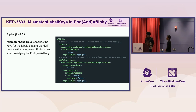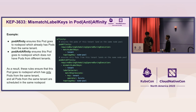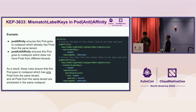At the same time, we introduced mismatch-label keys, which sounds very similar. Mismatch-label keys specifies the keys for the labels that should not match with the incoming pod's labels. For example, a pod has both pod affinity and pod anti-affinity: pod affinity ensures the pod goes to a node pool that already has pods from the same tenant, and pod anti-affinity ensures it avoids node pools with pods from different tenants. This combination ensures pods go to a node pool with only pods from the same tenant.